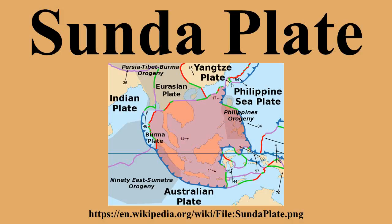The Sundar Plate includes the South China Sea, the Andaman Sea, southern parts of Vietnam and Thailand along with Malaysia, and the islands of Borneo, Sumatra, Java, and part of Celebes in Indonesia, plus the southwestern Philippines islands of Palawan and the Sulu Archipelago.